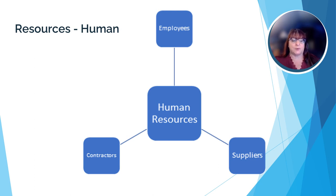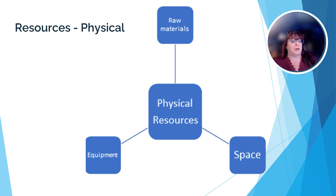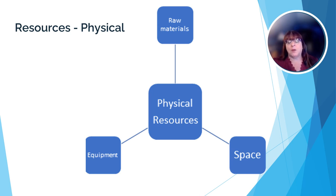Physical resources are any physical objects that are needed to complete a project task. They could be the raw materials needed to build a computer, a piece of machinery that alters the raw materials to complete a compound, or the physical space where the machinery sits as it processes the raw materials. Don't forget there are often human resources who are using the physical resources, so they must always be kept in mind as well.